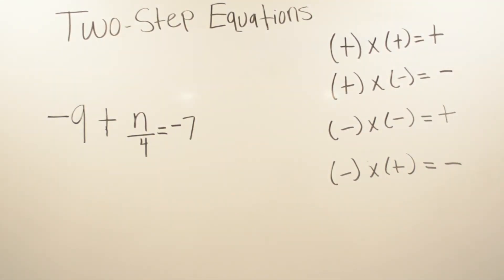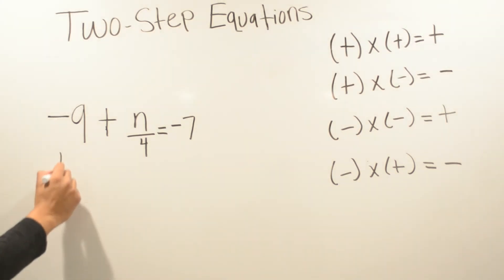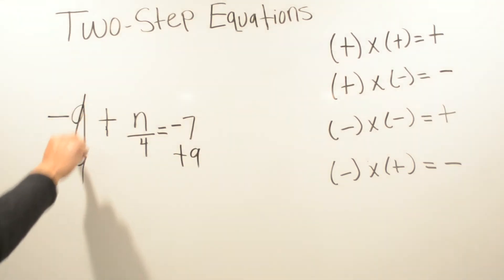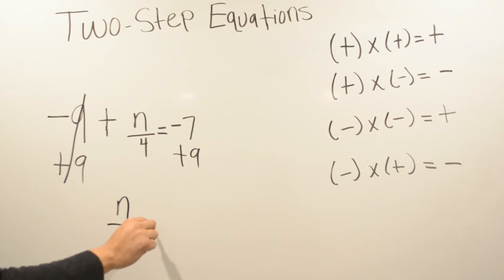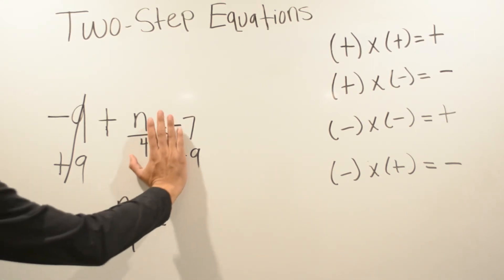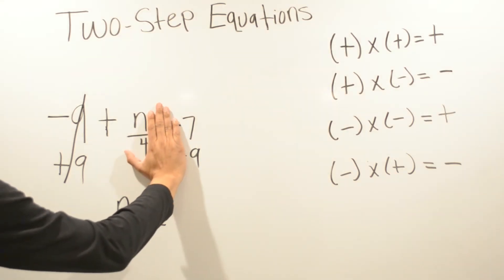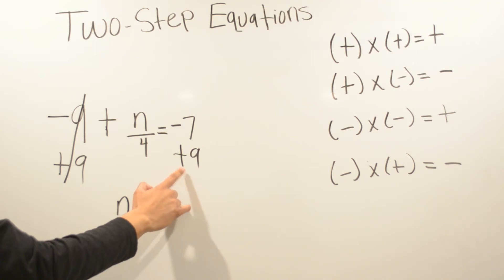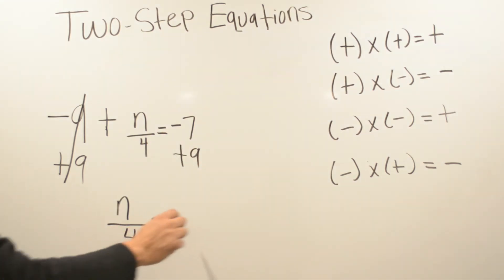This problem we have negative nine plus n divided by four equals negative seven. We're going to get rid of negative nine first — the opposite of negative nine is positive nine. Whatever we do on one side of the equal sign, we have to do on the other side to keep balance. We cancel that out, leaving n divided by four equals. We have a negative and a positive, so we know that's subtraction. Covering the signs: which is bigger, 7 or 9? Nine is bigger, and the sign in front of 9 is positive, so the answer is positive. Subtracting 7 from 9 gives us 2.